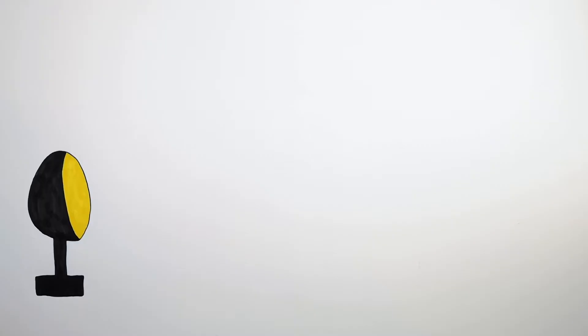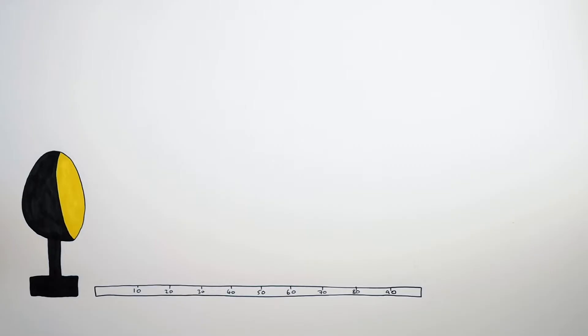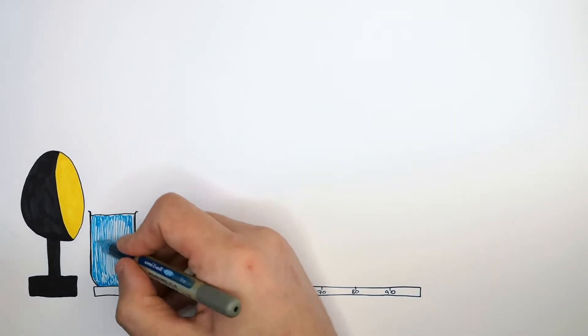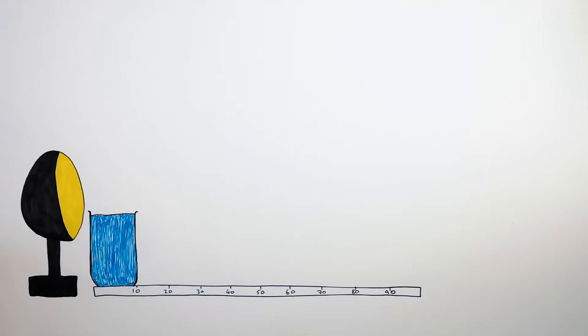In this video I'm going to explain how light intensity affects the rate of photosynthesis in algal balls. You'll firstly set up a lamp as your light source, then place a meter ruler away from the light source, and place a beaker directly in front of the light source filled with cold water. I will explain the function of the beaker later.